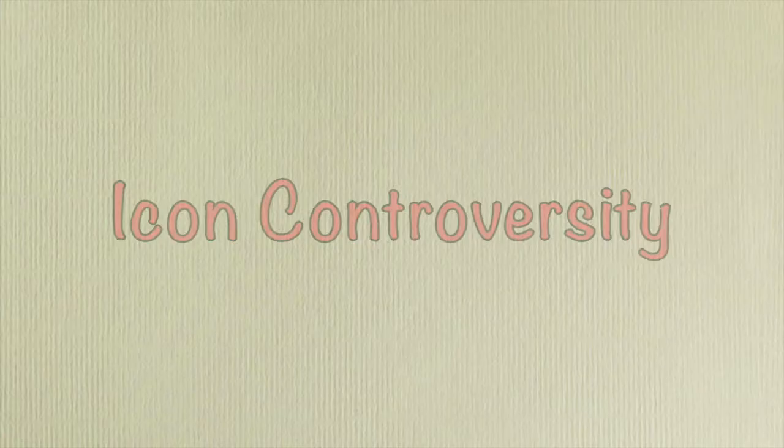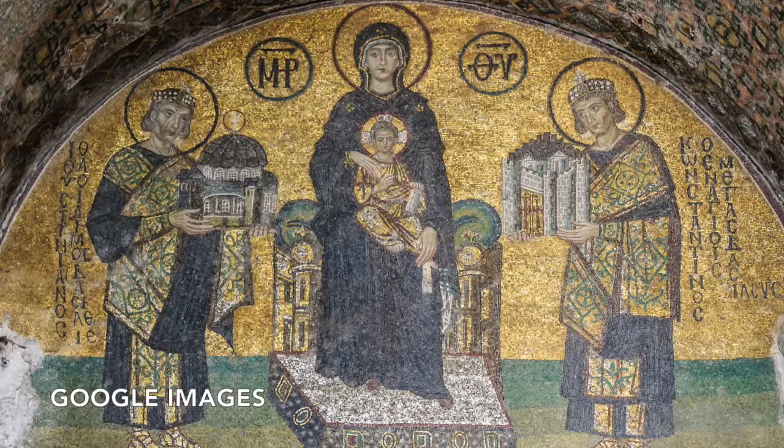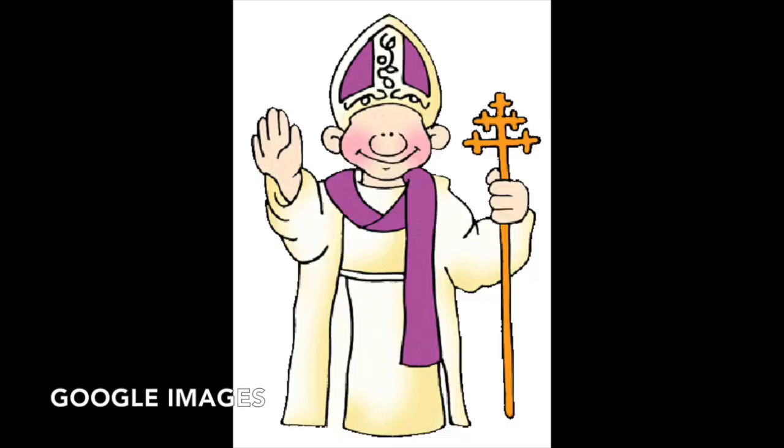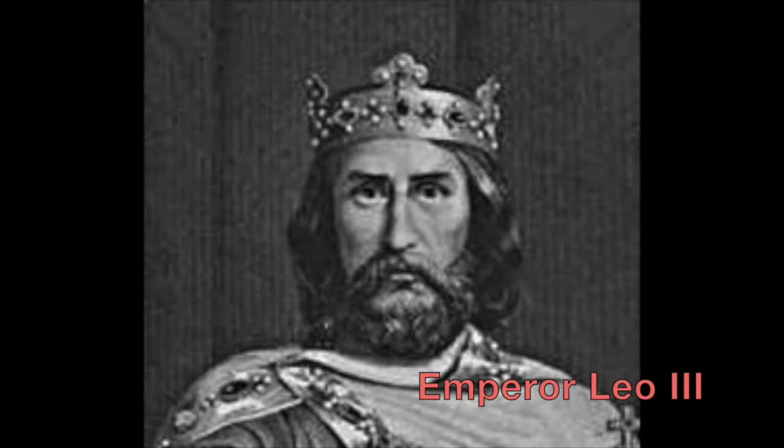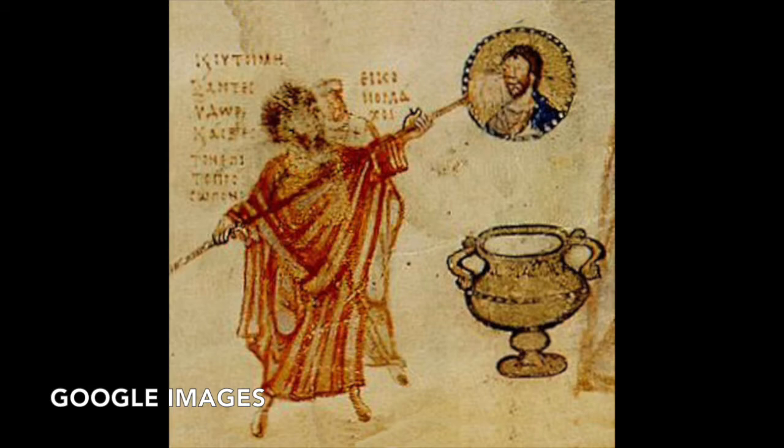Icons are symbols of religious significance, and icons were used in the east to help aid devotions to God. The Pope in the west supported the use of icons, but the Byzantine Empire in the east did not. The Byzantine emperor Leo III banned the use of icons because he felt that their use was equal to worshipping things that went against his teachings and his religion. This led to riots and destruction of the icons, and these icon breakers were called iconoclasts.